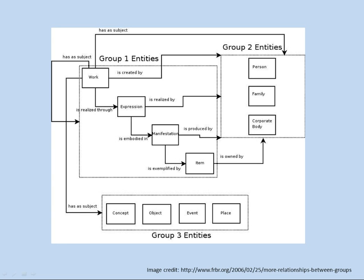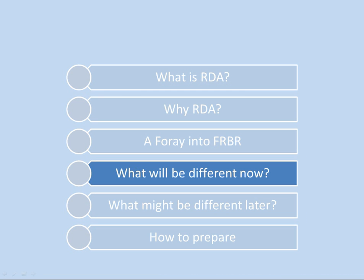Here is a diagram of how the various groups of entities relate to each other. We have those group one entities — work, expression, manifestation, and item. Over on the side are the group two entities: a person, a family, or a corporate body could create one of the group one entities. The group three entities are basically subject headings — what a work is about. That was a really quick introduction to FRBR.